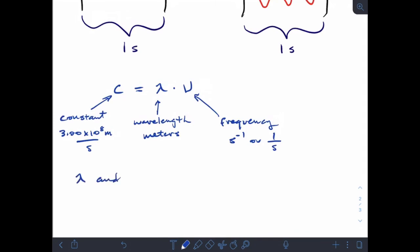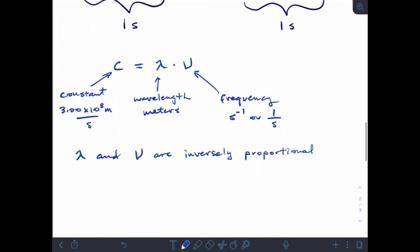Lambda (wavelength) and nu (frequency) are inversely proportional. To put that in plain language: when one goes up, the other goes down. If wavelength is big, frequency is small. If wavelength is small, frequency is big. They're opposite.